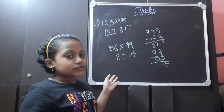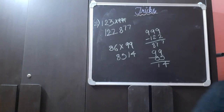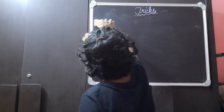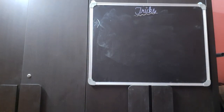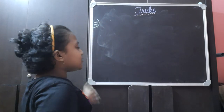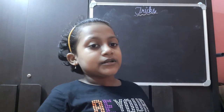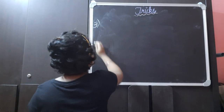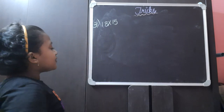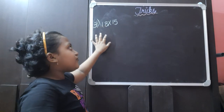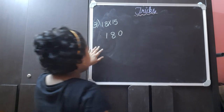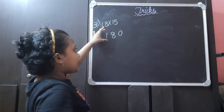Now let us go to the third trick — the last trick we are going to learn in this video. In the third trick we are going to see how to multiply with the number 15. For example, 18 into 15. First, beside the number 18 we write a 0 to get the number 180.